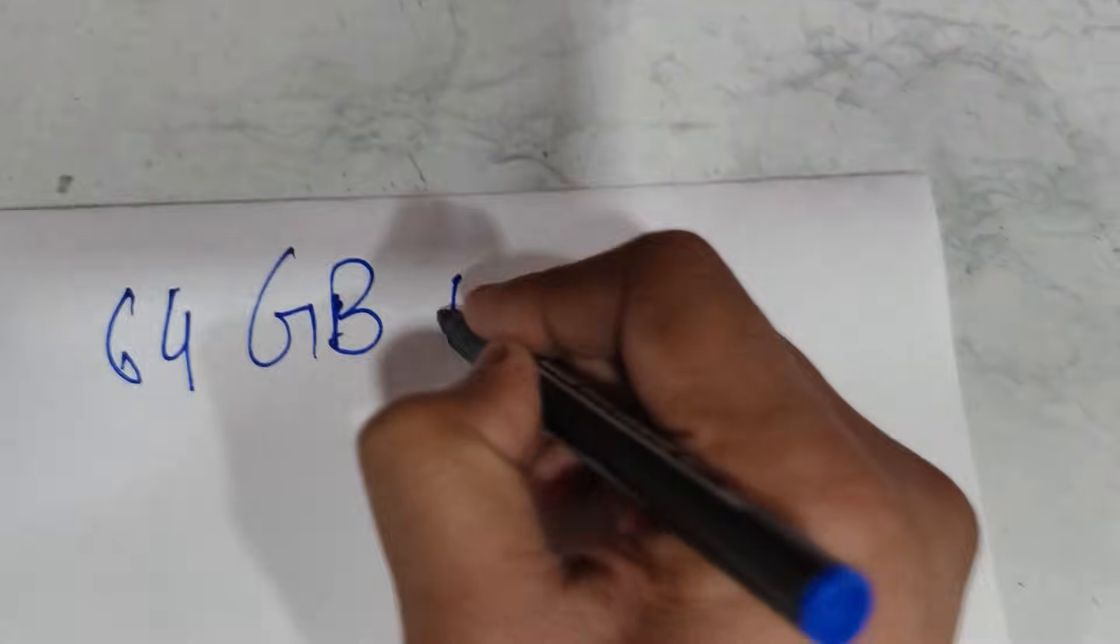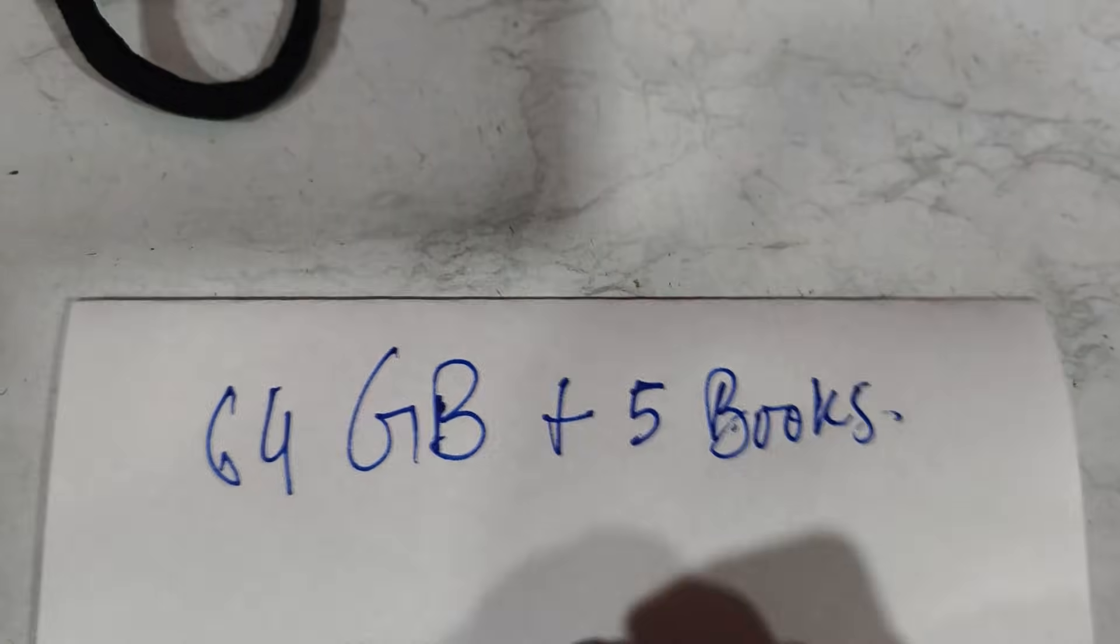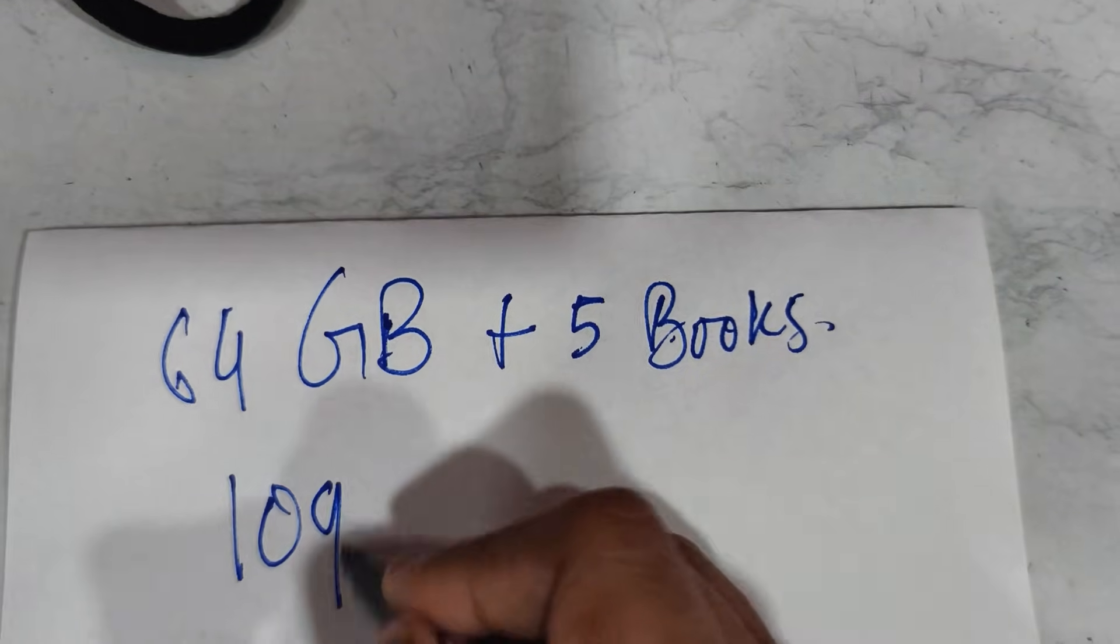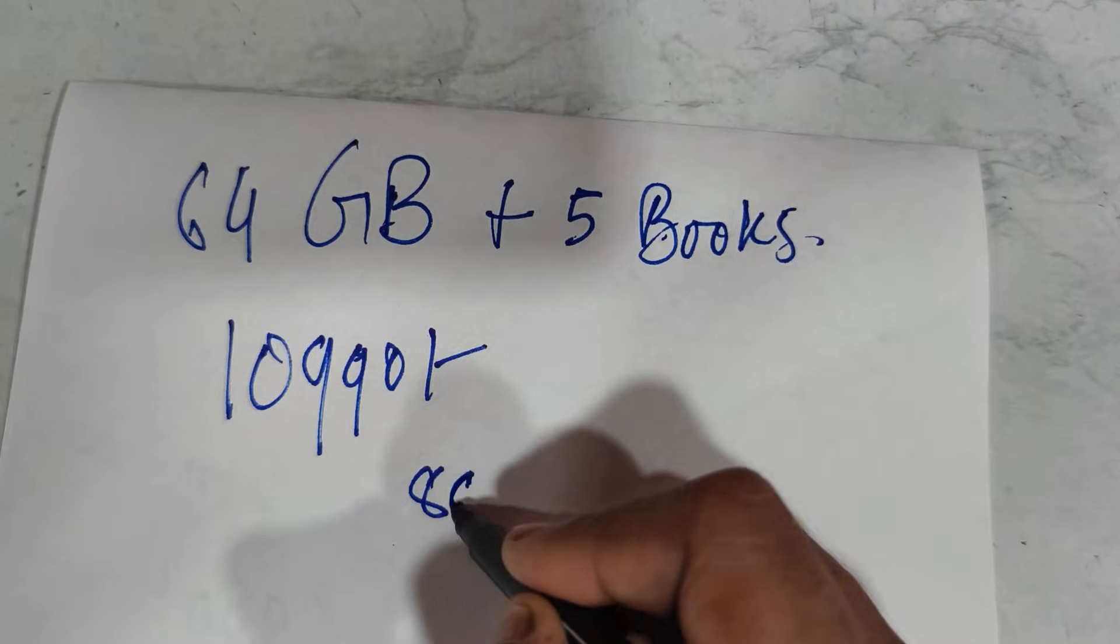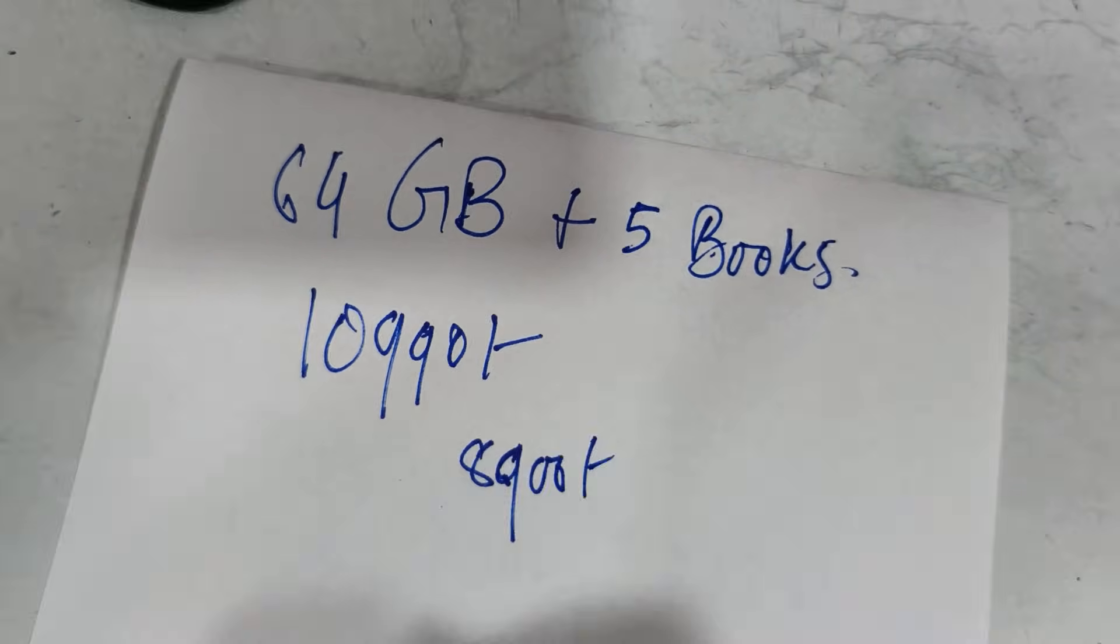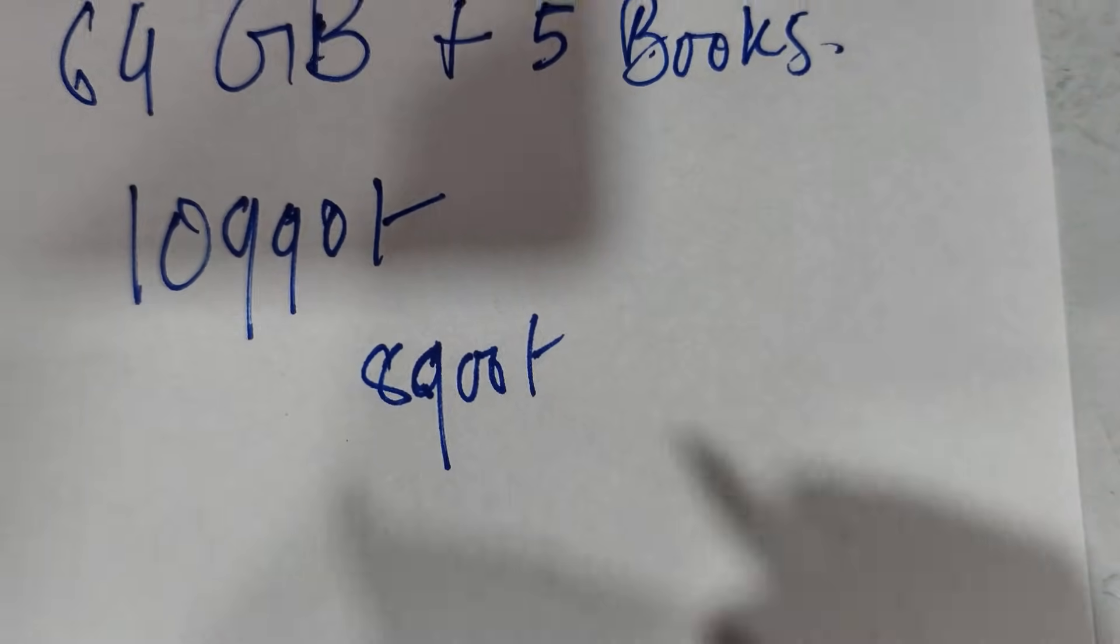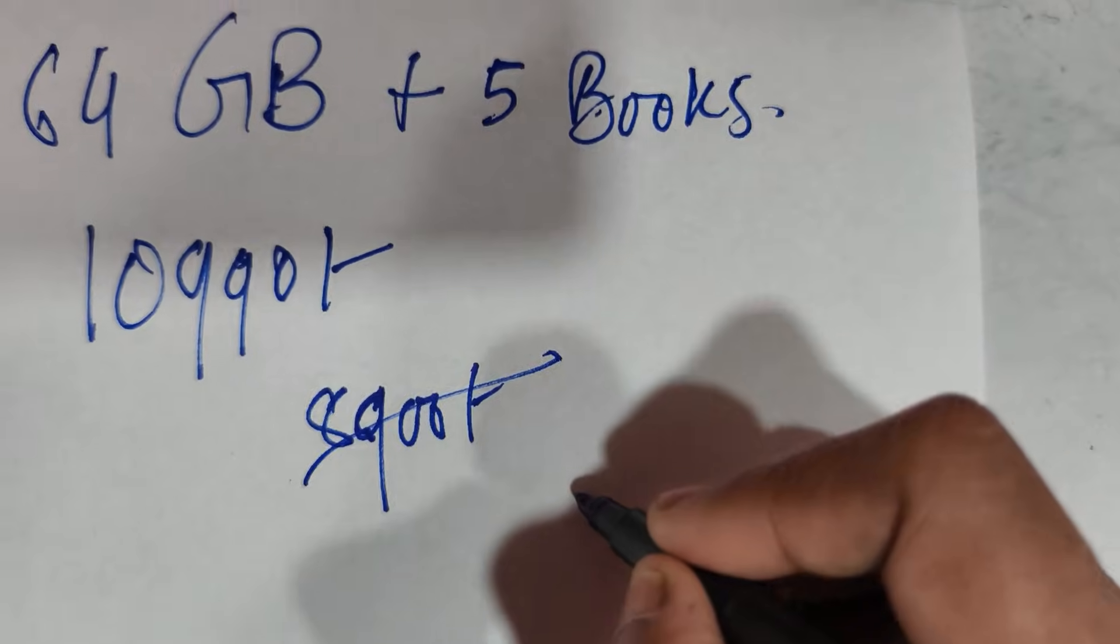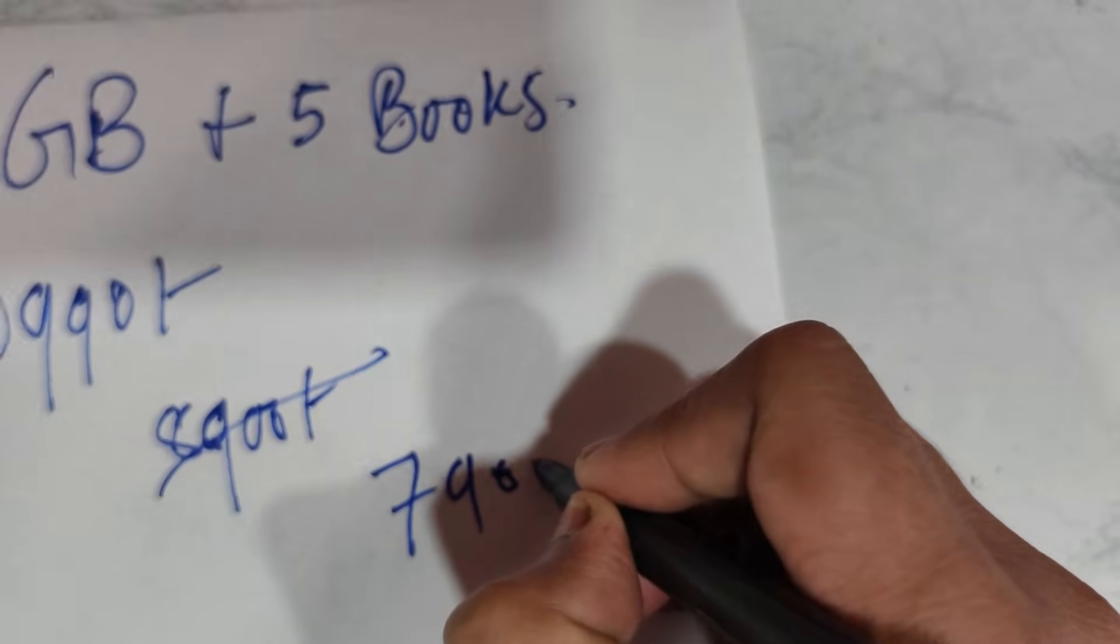Now if you want to add 5 books to it, there will be 64 GB pen drive plus 5 books. If you include that, usually the price was 10,990. We thought to give it at 8,900 rupees, but then again we thought why not at the beginning of 2026 give you more discount and make it 7,900 rupees for you.